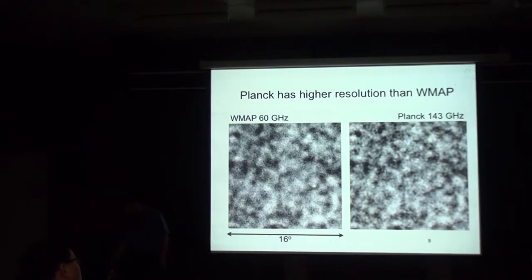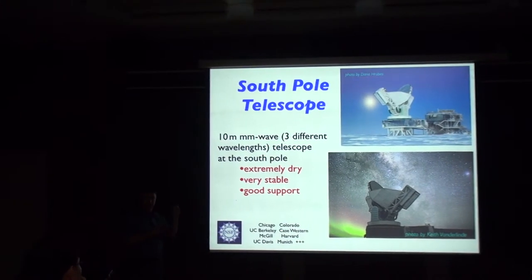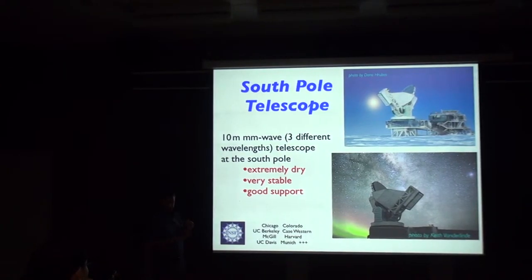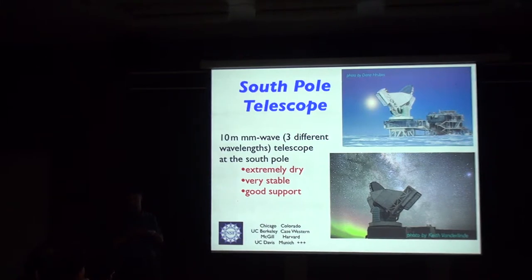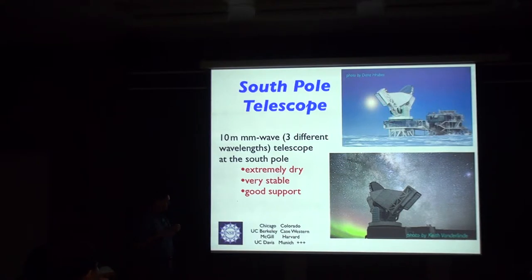The South Pole Telescope is a 10-meter millimeter-wave dish at the South Pole, observed at three different frequencies: 90, 150, and 220 GHz — roughly millimeter wavelengths. Here's the telescope with the moon behind it, and another picture with the Milky Way. It's just a big telescope sitting at the South Pole. These pictures were taken by our winter-overs — two people every year who sit down there and look after the telescope while it takes all the data.